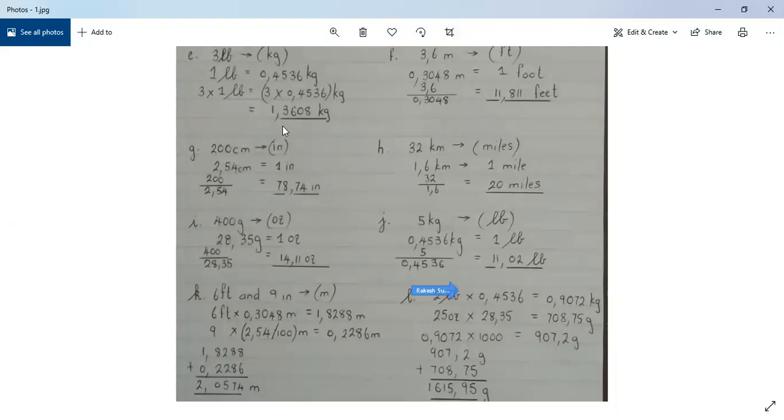Moving on to question 4h to convert 32 kilometers to miles. Now in this question, we are not going to multiply. We now need to convert 32 kilometers to miles, given that 1.6 kilometers equals 1 mile. So we need to, in one sense, know how many groups of 1.6 kilometers are there in 32 kilometers.